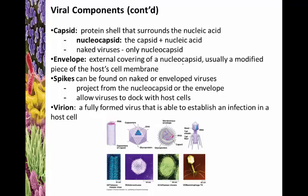Capsids are protein shells surrounding the nucleic acid. The nucleocapsid is what we call the capsid and the nucleic acid together by themselves. Viruses that are missing that additional coating - in other words, just the chocolate-covered peanut - we refer to as naked viruses, and they only contain the nucleocapsid. Those that have the additional coating on the outside have the envelope, which covers the nucleocapsid. Usually this is a modified piece of host cell membrane - basically the virus, on its way out of the cell, wraps itself in host cell membrane, and this becomes the viral envelope.